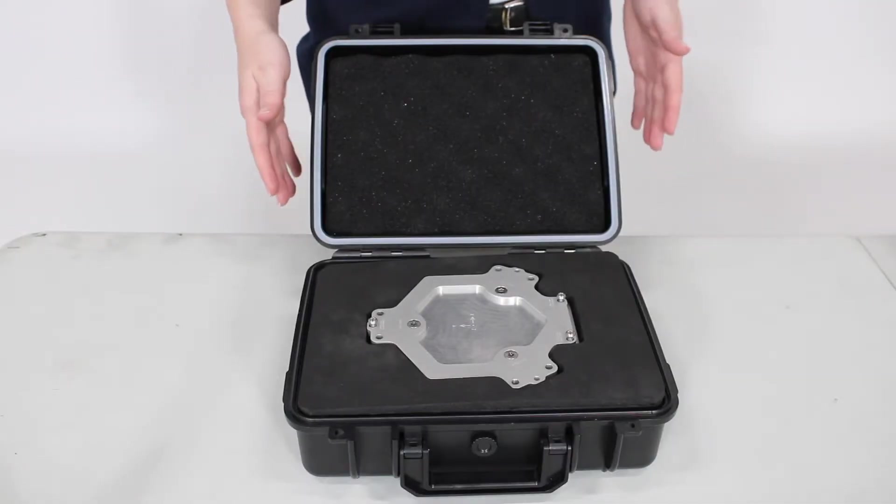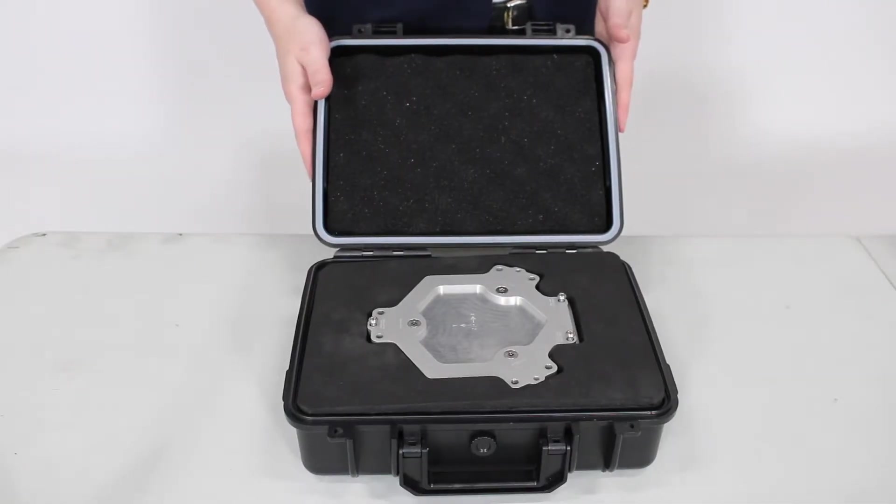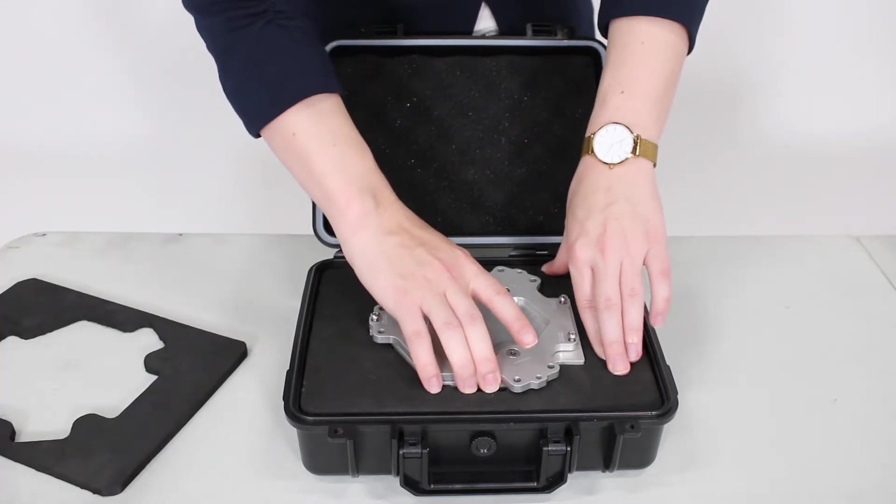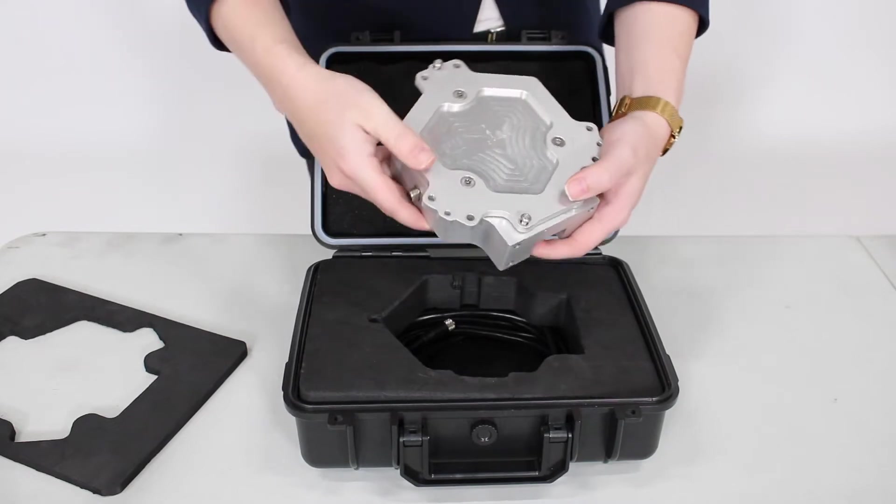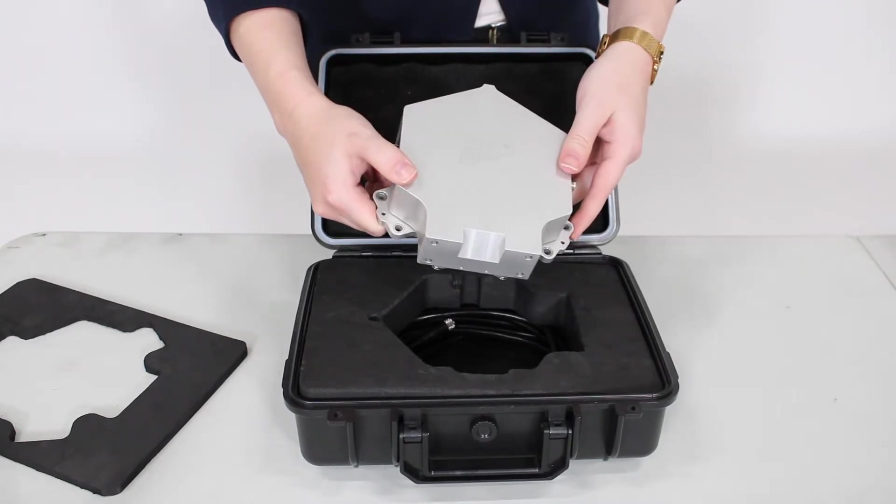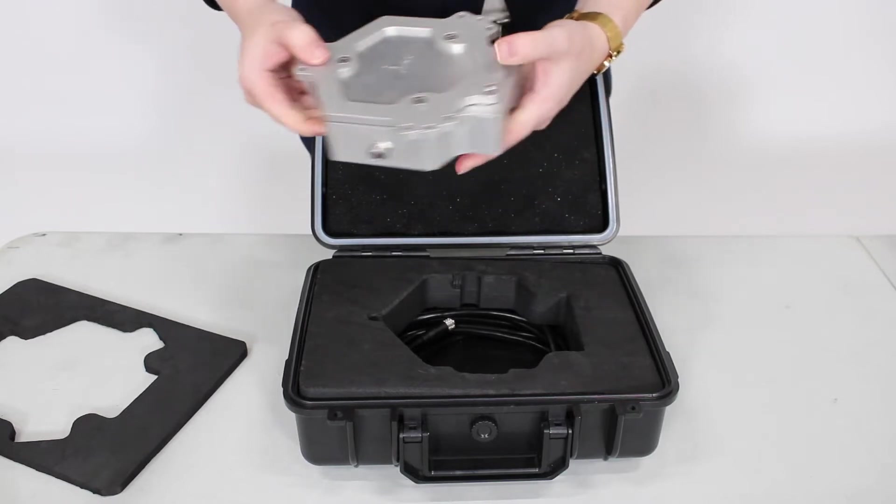In the hard case we have the force measurement unit or FMU which measures torque and thrust. The FMU also includes a quick installation guide which includes key information like torque settings for the screws and step-by-step guidance to install the motor mount, optical probe, and FMU.